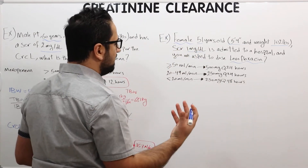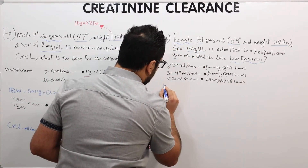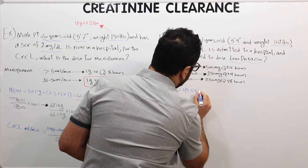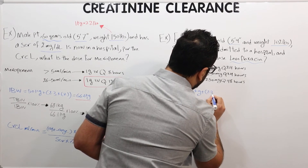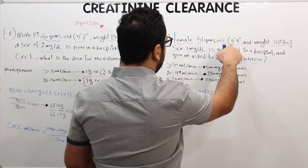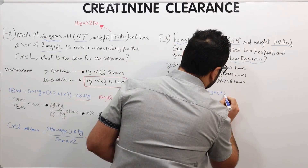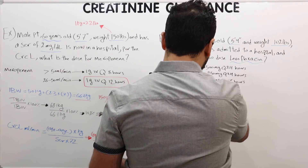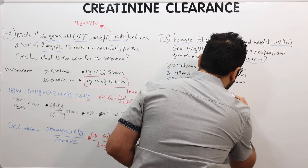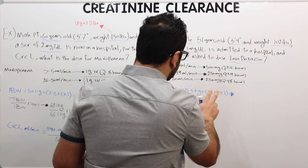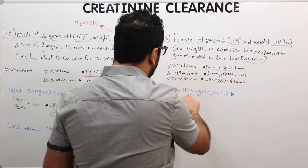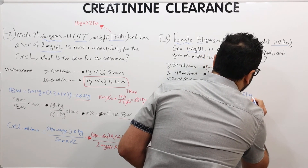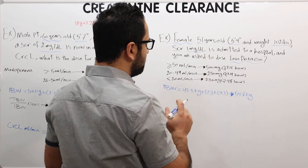Step one is to calculate the ideal body weight. For females, the equation is different: 45.5 kg plus 2.3 times the number of inches above 5 feet. We have 4 inches above 5 feet, so 2.3 times 4, with multiplication done first before adding 45.5. The result is 54.7 kilograms — this is the ideal body weight for this patient.